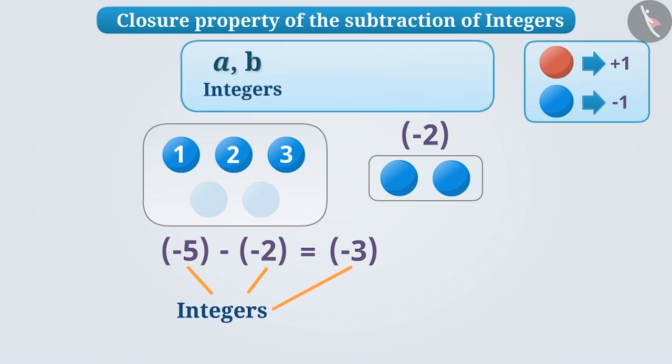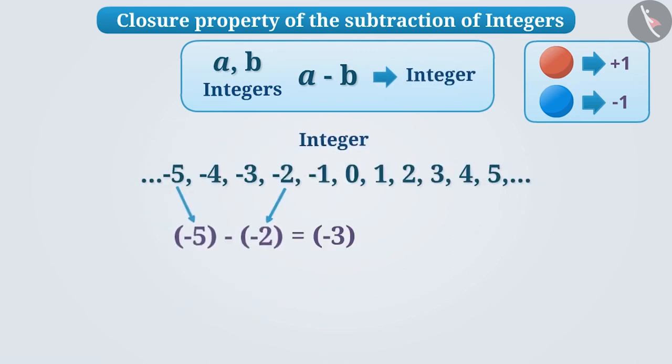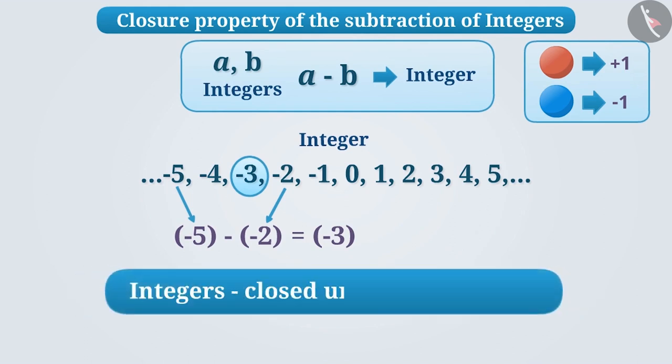Broadly, the subtraction a minus b of any two integers a and b are also integers. That is, the result is also the number from the same group of integers. Hence, integers are closed under subtraction.